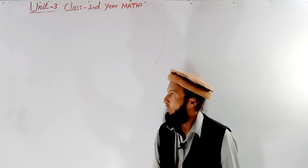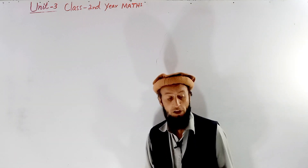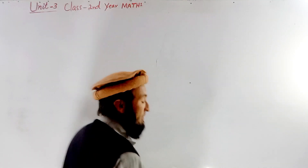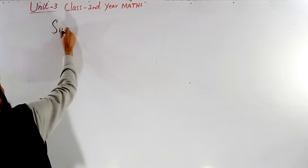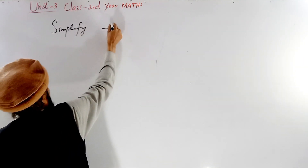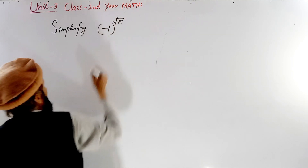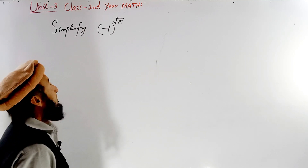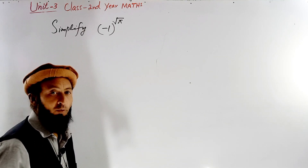We have already done this in an interview at Harvard University. Now let's start this question: simplify (-1) raised to the power of square root of pi. Here, -1 is the base and the power is the square root of pi.